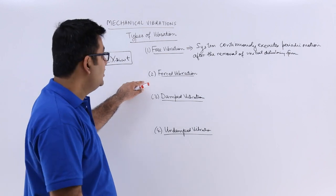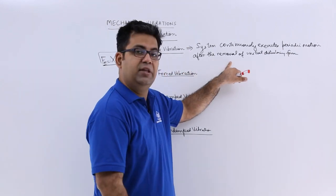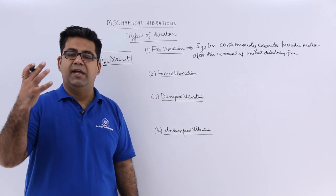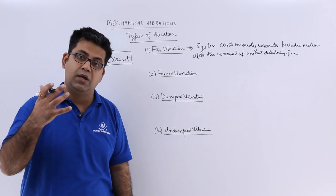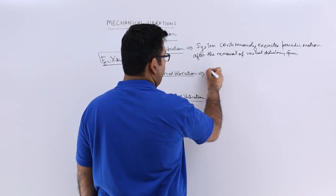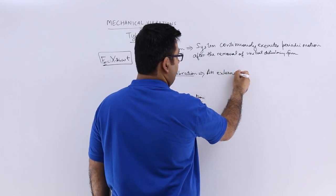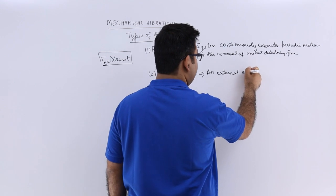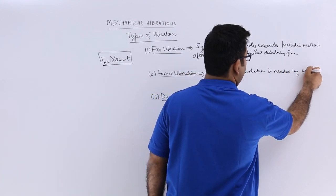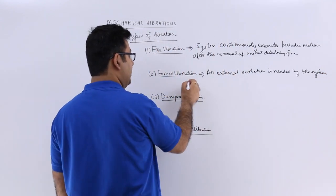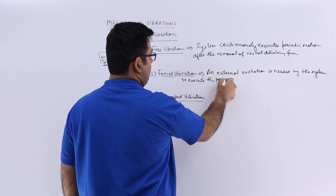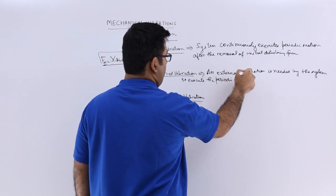Now we come to the forced vibration. It is the opposite of the free vibration. You cannot remove the initial disturbing force if you want the system to keep executing the periodic motion. A constant external disturbing force or an excitation force is required for the system to keep executing that periodic motion. An external excitation is needed by the system to execute the periodic motion.